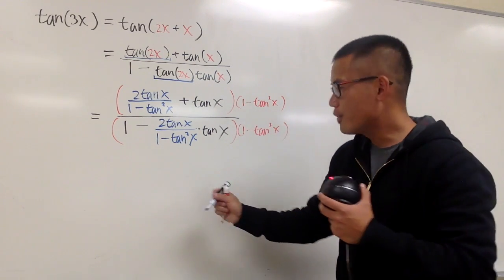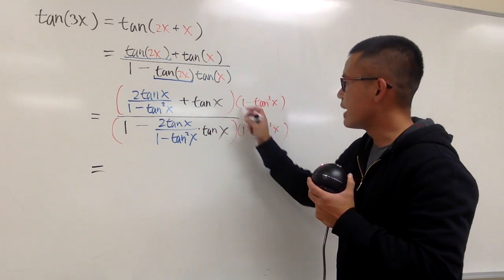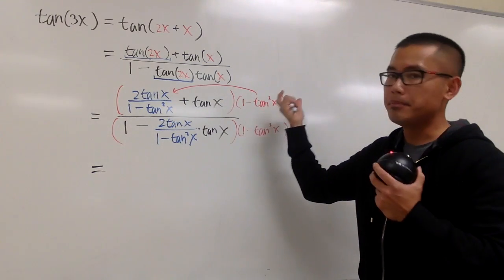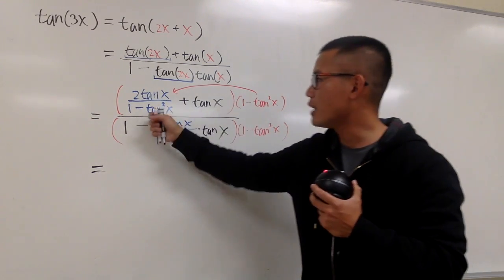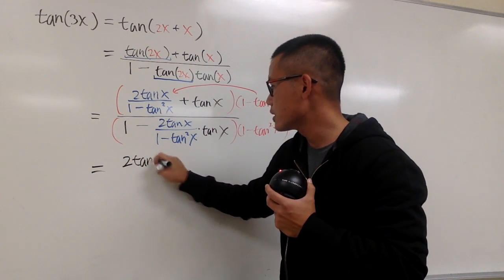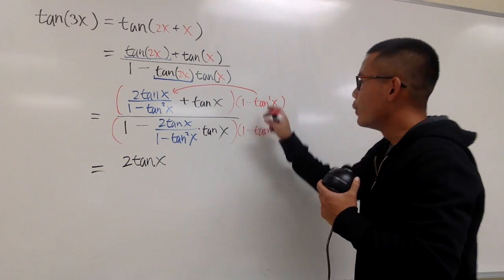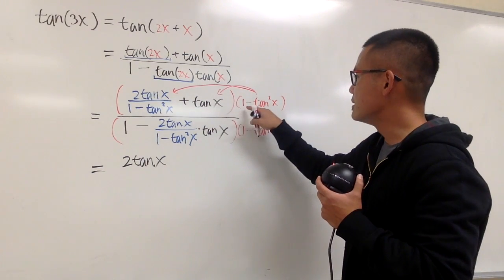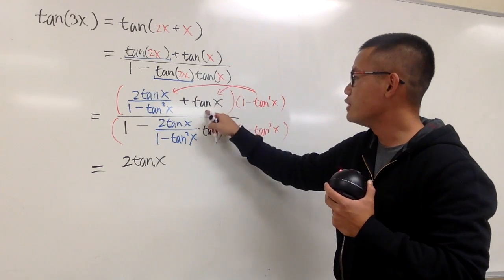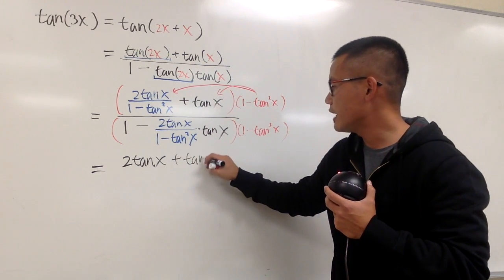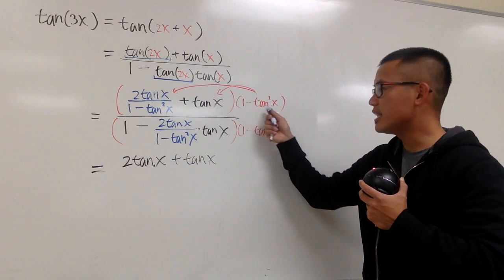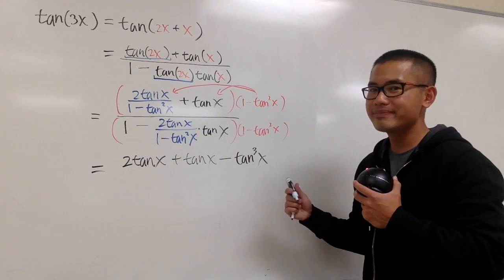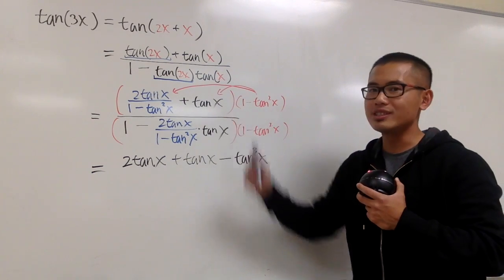Now we distribute. We take this factor — this entire parentheses (1 minus tangent squared x) — times the first part. Notice that this denominator and that one match exactly, so they cancel out, and we just have 2 tangent x on top. For the next term, it's slightly trickier — we take this parentheses times tangent x, and be sure you distribute: tangent x times 1 gives plus tangent x, and tangent x times negative tangent squared x gives minus tangent to the third power x.